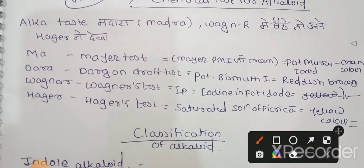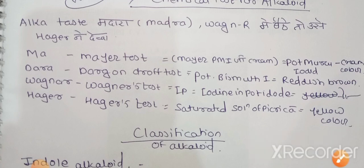After that, Hager's test uses saturated solution of picric acid and gives yellow color. So remember Hager went to picnic, so picric acid comes from there.